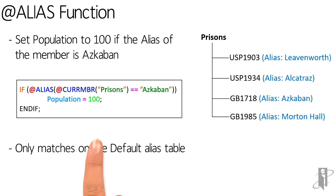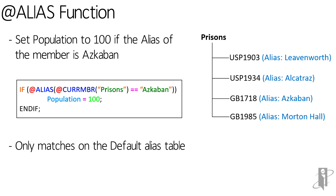The alias function only matches on the default alias table. If you have multiple alias tables in your Essbase outline, the alias function will only return the value from the default alias table, unfortunately.